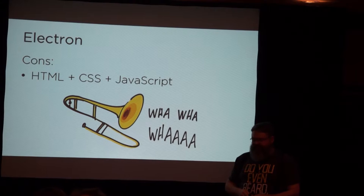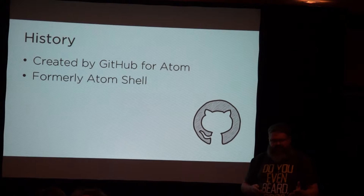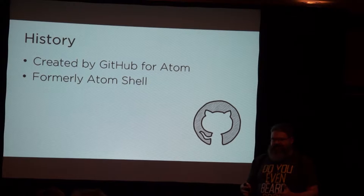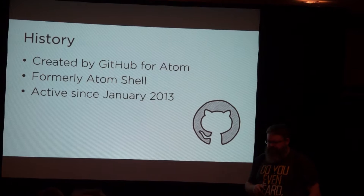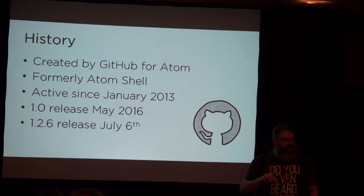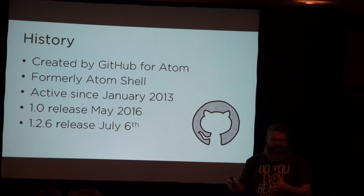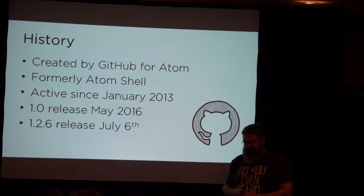Some history about Electron: it was created by GitHub for the Atom Editor and was originally called the Atom Shell. To avoid confusion and make sure people didn't think the only thing you could do with it was build an editor, they renamed it to Electron. It's been around since about 2013. The 1.0 release was earlier this year. Ever since 1.0, they've been following the Chrome and Node V8 stuff really closely, so the latest versions of Electron are usually about a week to two weeks behind the stable releases of Node and Chromium.